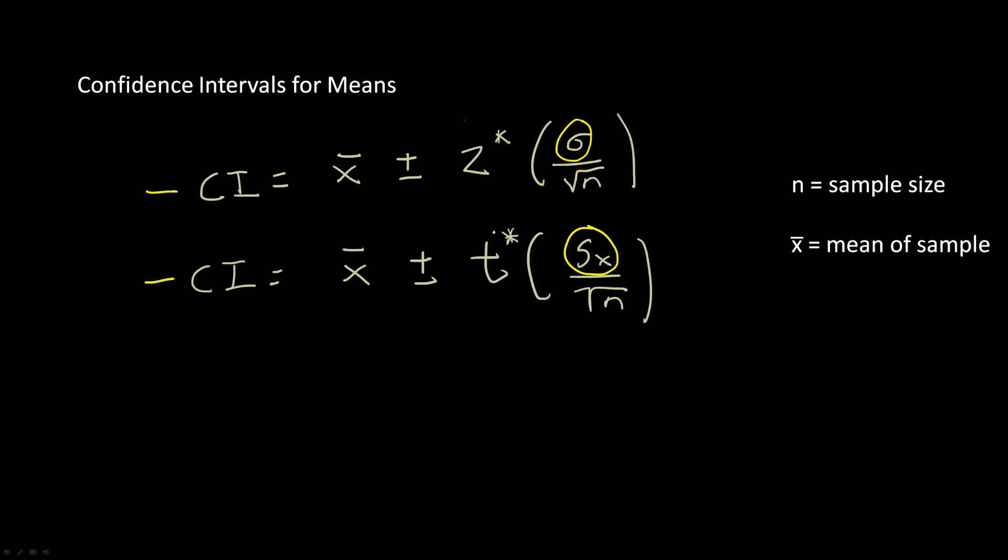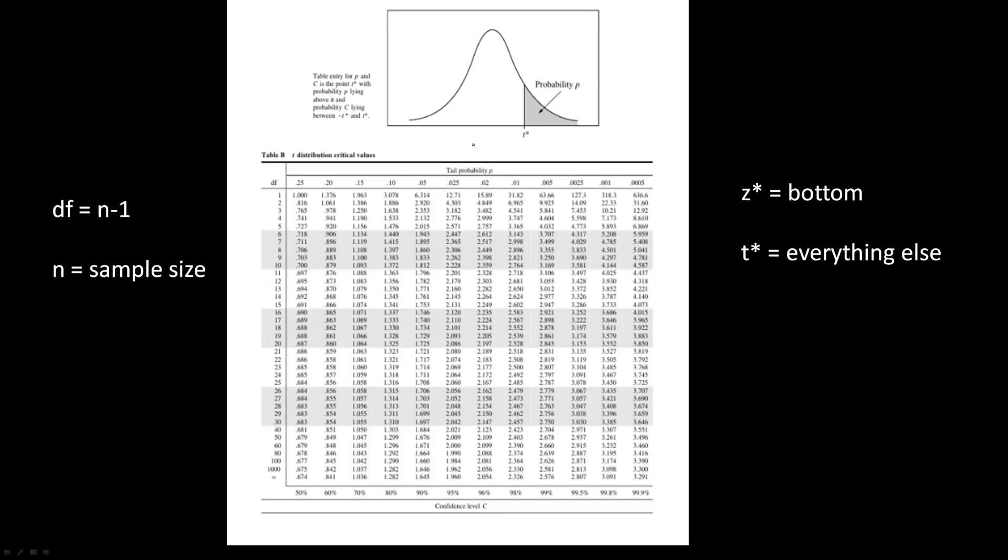So you might also be wondering what the Z star and T star values here are too. Well, these are called critical values, and they're the second way in which these two equations are different besides the standard deviation part. So how do you find these critical values? Well, you have to use a special chart.